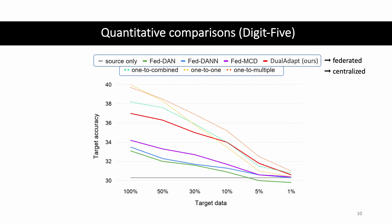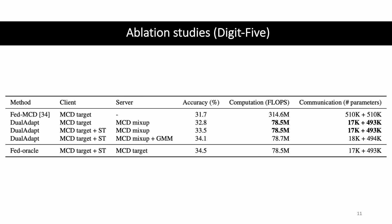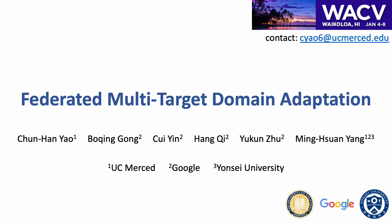Specifically, we evaluate the source-only baseline, the federated methods, and the centralized training methods. We perform ablation studies on the Digit-5 dataset by removing individual components of our framework. Comparing with the federated version of MCD method, Dual ADAPT requires significantly lower communication and computational costs. For more information, please refer to our paper and supplemental material.